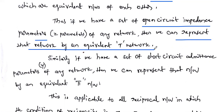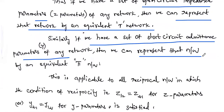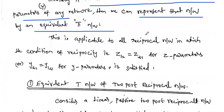If you know for one two-port network the open circuit impedance parameter, we can draw that particular two-port network in the form of a T structure. Similarly, if we have a set of short circuit admittance parameters — that is Y-parameter — we can represent that network by an equivalent Pi network, connecting elements in the shape of a Pi network. This is applicable for all reciprocal networks.